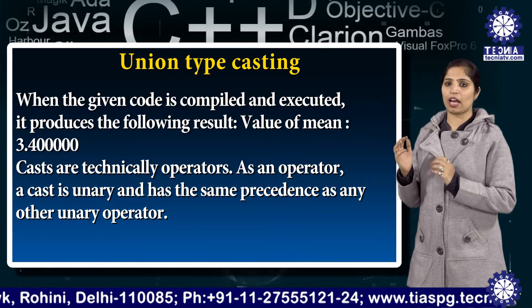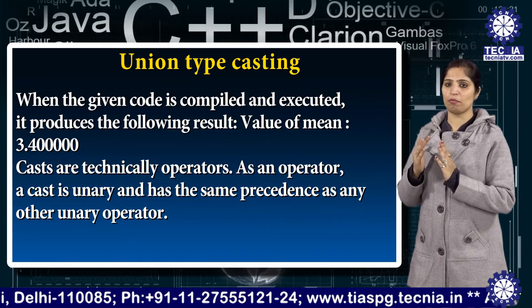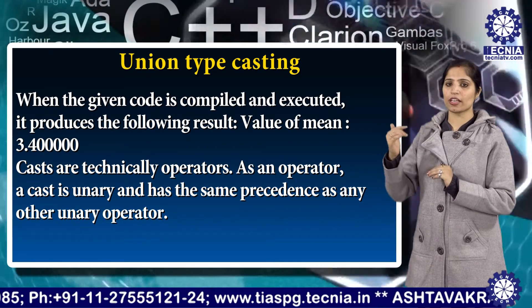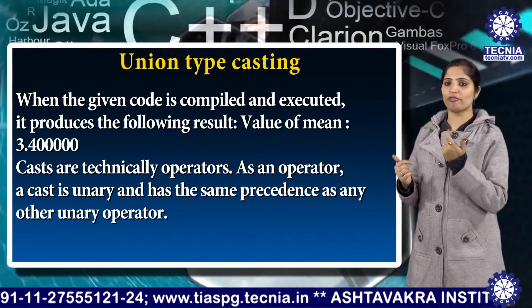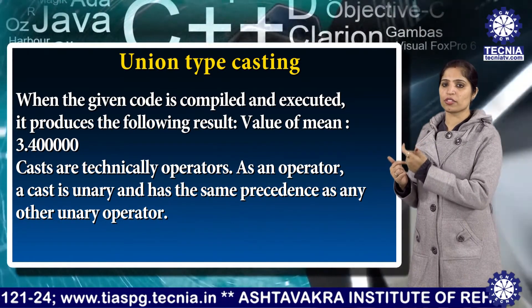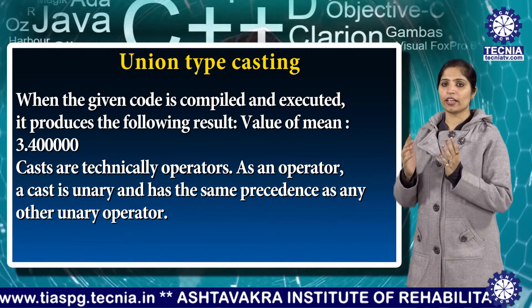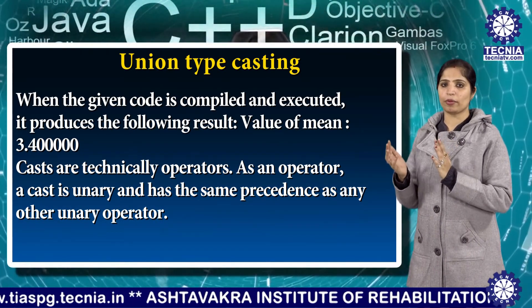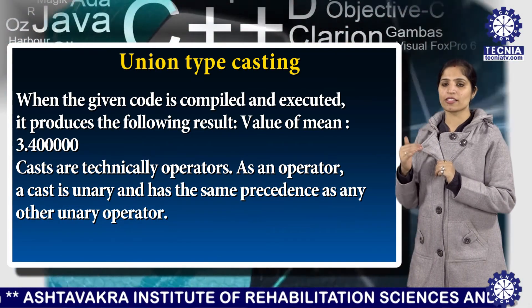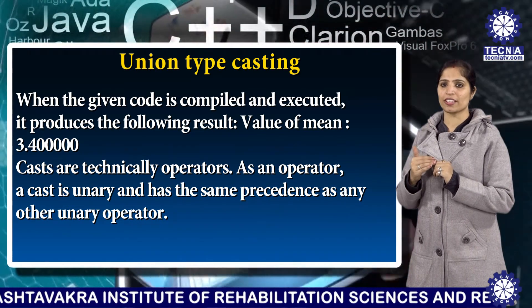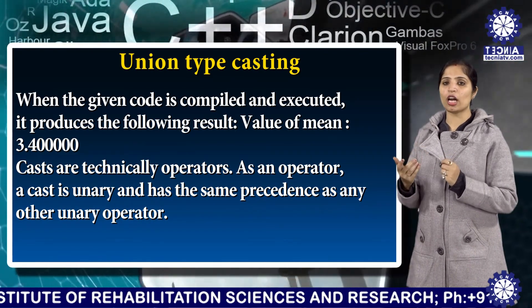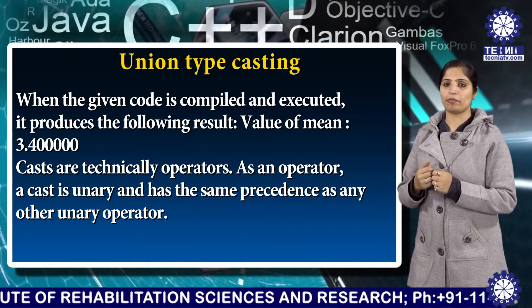In the given code, when compiled and executed, it produces the result: the value of mean is 3.4000. Casts are technically operators. As an operator, a cast is unary and has the same precedence as any other unary operator. That's all about typecasting.